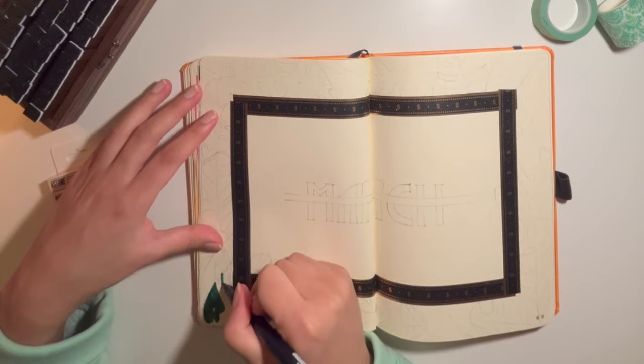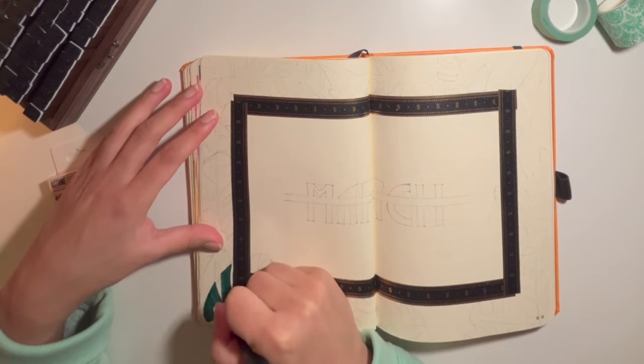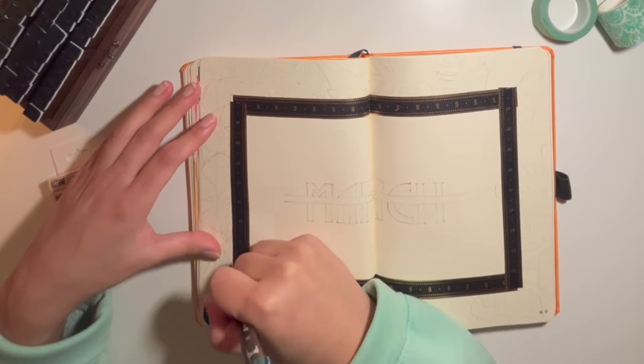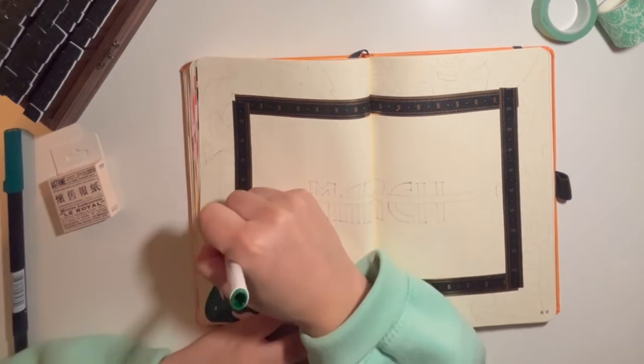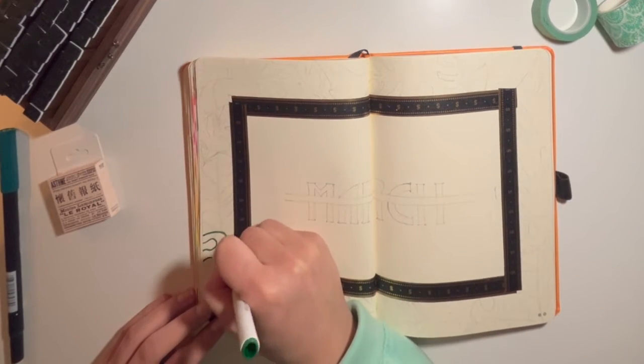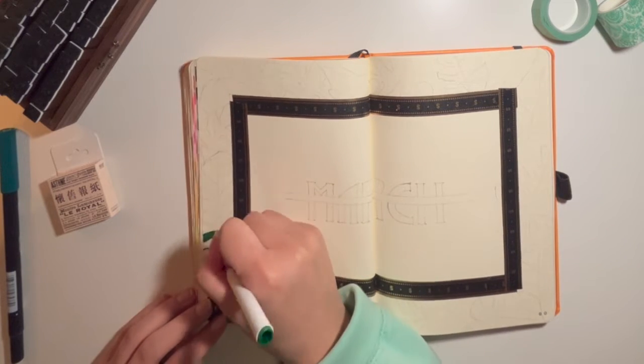I did find a picture on Pinterest where I got the inspiration for doing this sort of leaf border design for the March page spread, so I will link that below.